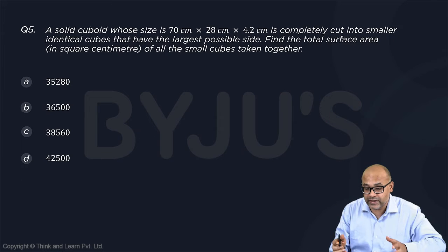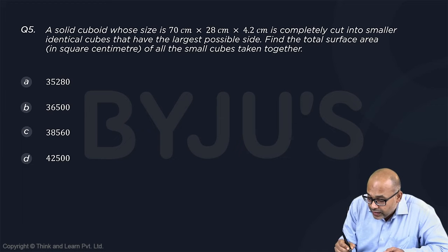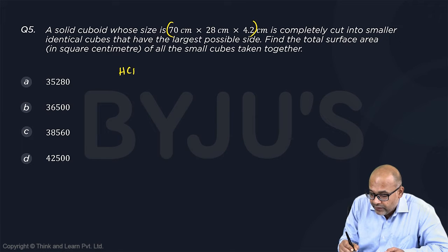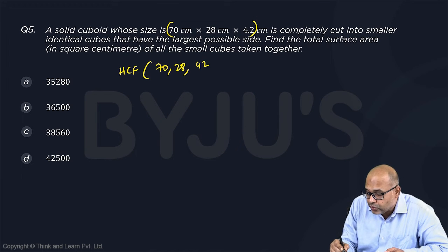So the logic behind this kind of question is the largest side is the HCF of these three numbers. So highest common factor of 70, 28 and 42 is 42 by 10.